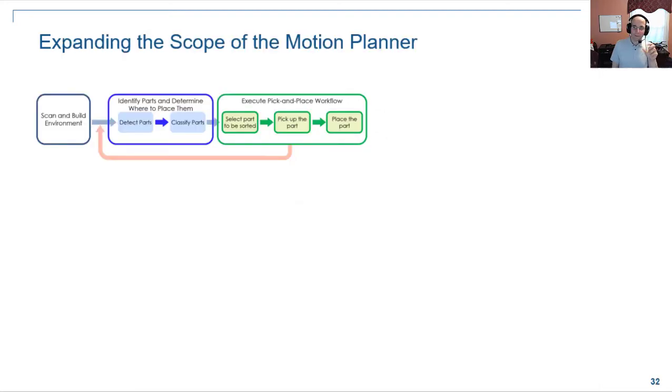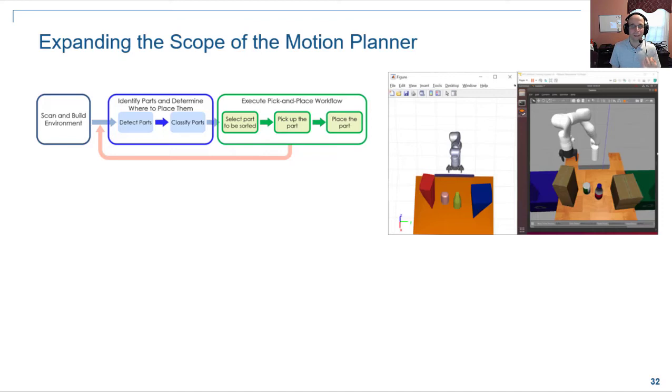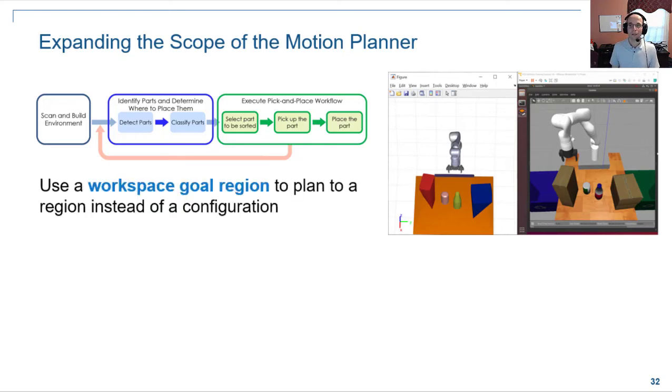So up until now, we've been assuming that you can plan configuration to configuration, but many pick and place applications are more broad than that, right? You don't just go from one spot to the next, but you also have to dynamically scan your environment and detect obstacles. And that's really when your planning starts. So it might be a dynamic environment, not just a static point to point type configuration. And in applications like this, what might be more ideal is to plan to a region rather than a specific configuration. And the workspace goal region is a popular approach there.